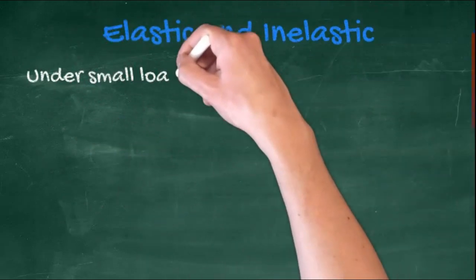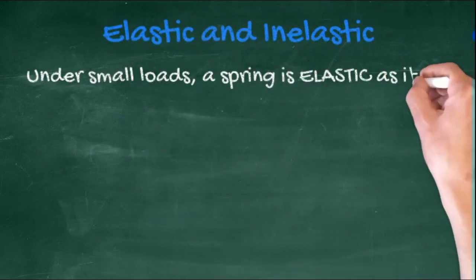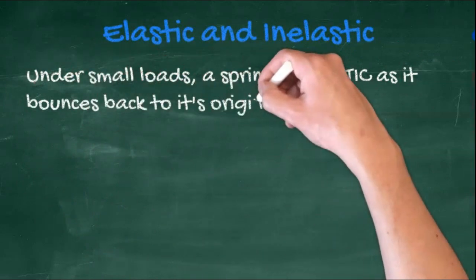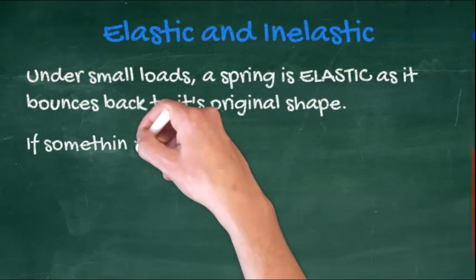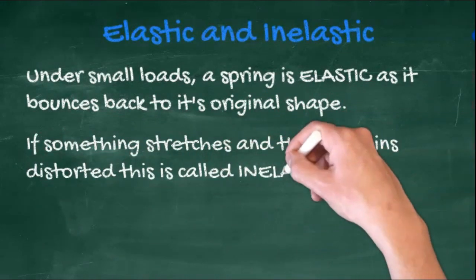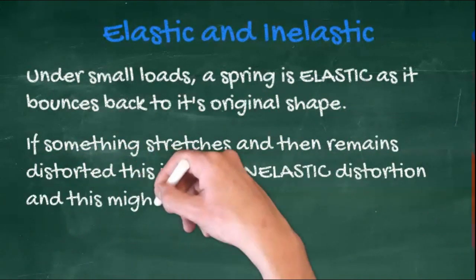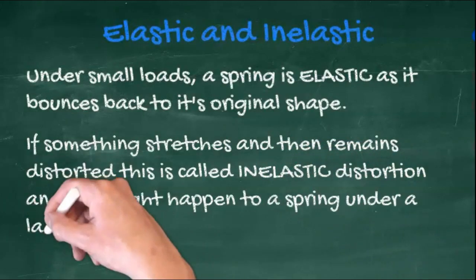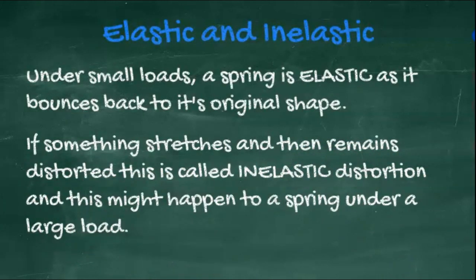Under small loads, a spring is elastic, as it bounces back to its original shape. If something stretches and then remains distorted, this is called inelastic distortion, and this could happen to a spring under a very large load, for example.